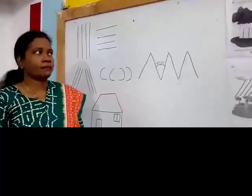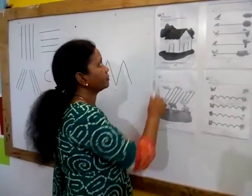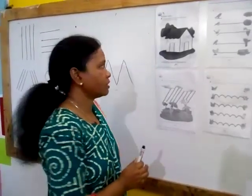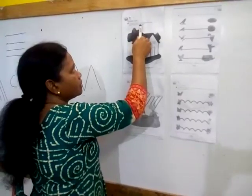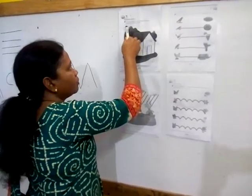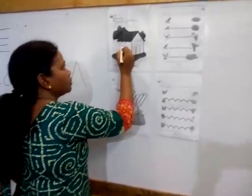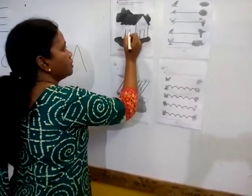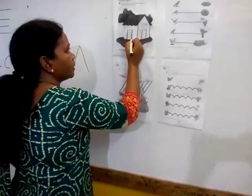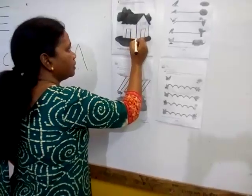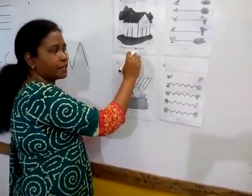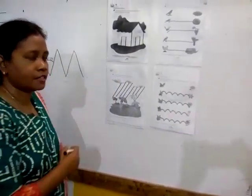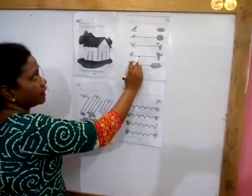Now we will do some activities. This is standing line. Trace the dotted lines to complete the house. One has been done for you. So here we will draw standing line, standing line, standing line. The lines you have traced are called standing lines.